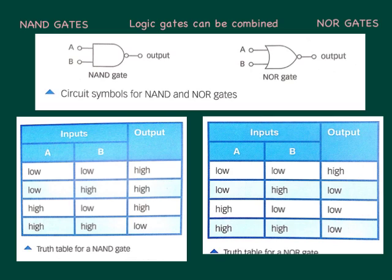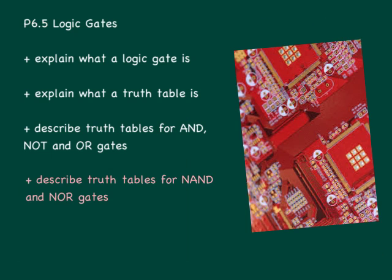So that brings us to the end of this lesson on logic gates. Let's review the lesson objectives. Hopefully you now have a better understanding of what a logic gate is, and in particular, how we can use truth tables to explain how logic gates work. You need to be able to describe the truth tables for AND, NOT and OR gates. And those of you that are doing the higher tier would also need to describe the truth tables for NAND and NOR gates.